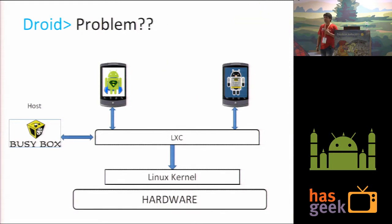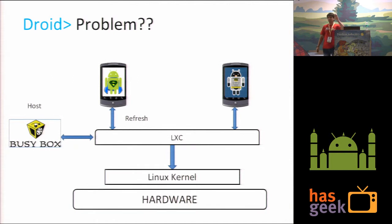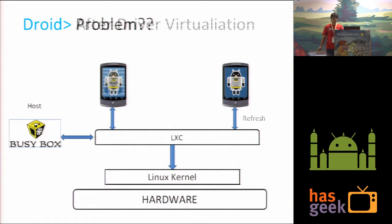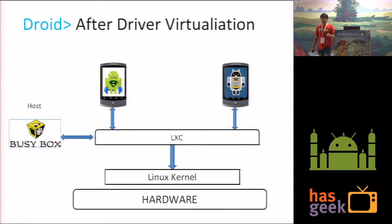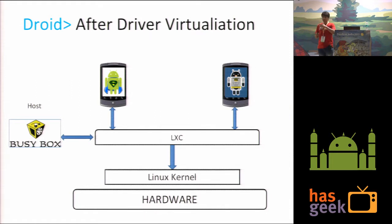There is a problem because Android was designed to run only one OS at a time. If Superman triggers a refresh, the screen buffer of Superman gets refreshed but so does the other — and we don't want that. Even if Batman refreshes its screen, both screens get refreshed. So what we need is driver virtualization. Android, being a forked version of Linux kernel, has introduced few drivers for optimization: the frame buffer driver, the screen driver, the input driver, ashmem and alarm driver. All these drivers need to be virtualized so the kernel knows which container is sending the request.